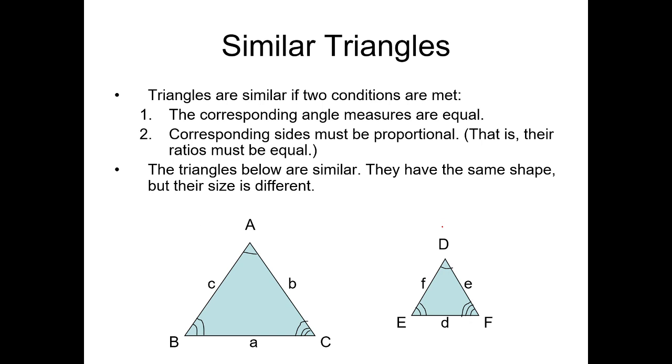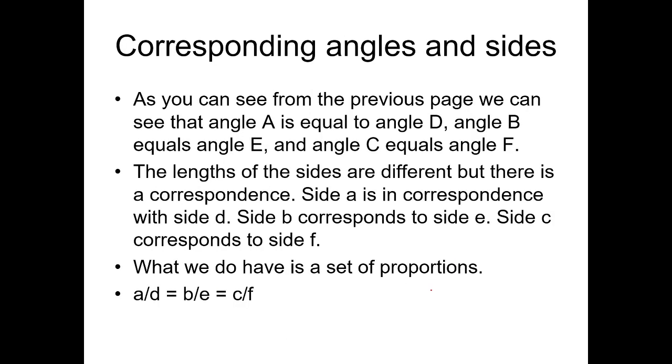We also have triangles which are called similar triangles. Triangles are similar if two conditions are met. The corresponding angle measures are equal, and corresponding sides must be proportional. That is, their ratios must be equal. They have the same shape, but their size is different.